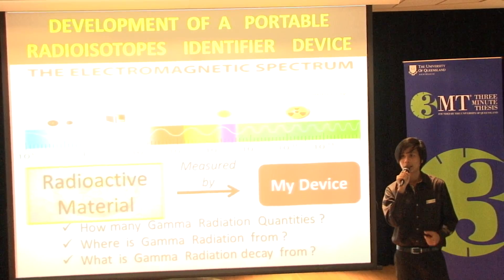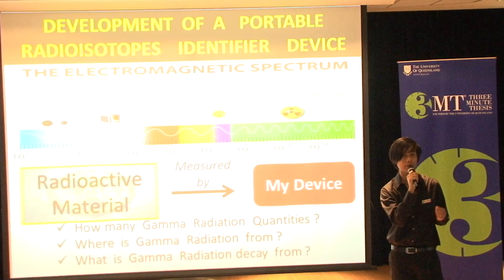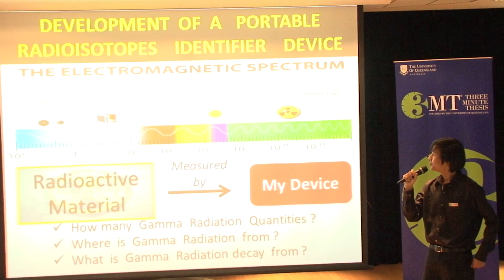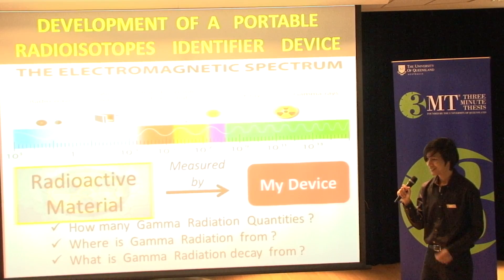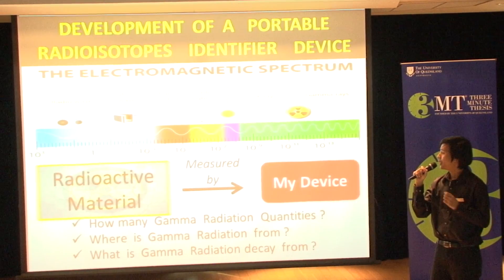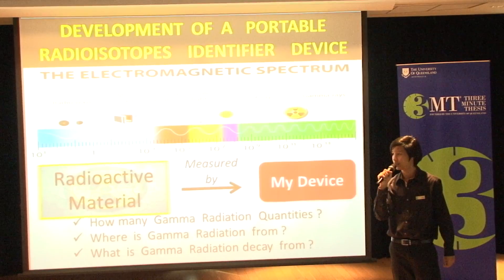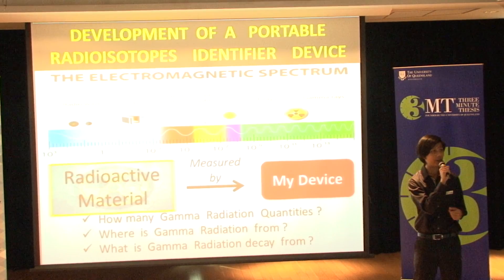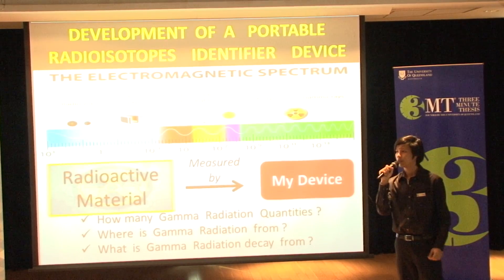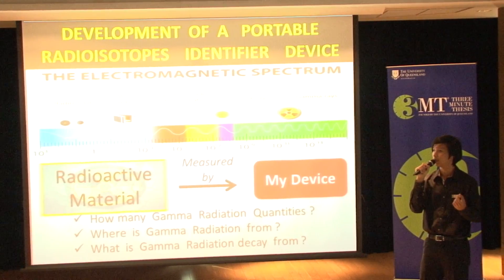My device not only detects the gamma radiation, but also has the ability to know or identify what the source is. It helps us a lot when handling an emergency situation. For example, when we find Cs-134 in the air, we can know that somewhere has a fission reaction, because Cs-134 is released from fission reaction.